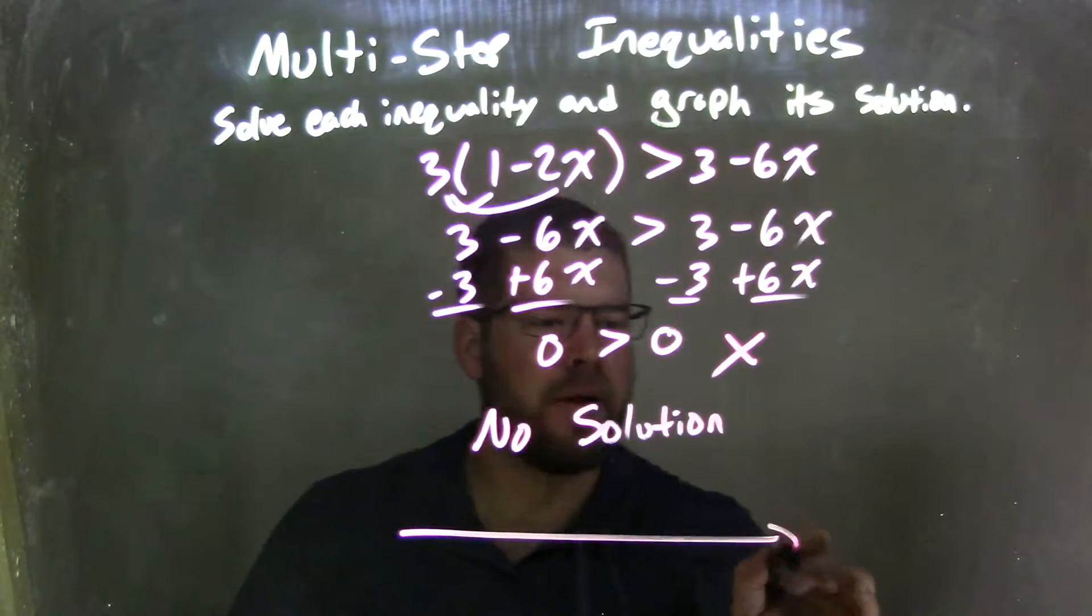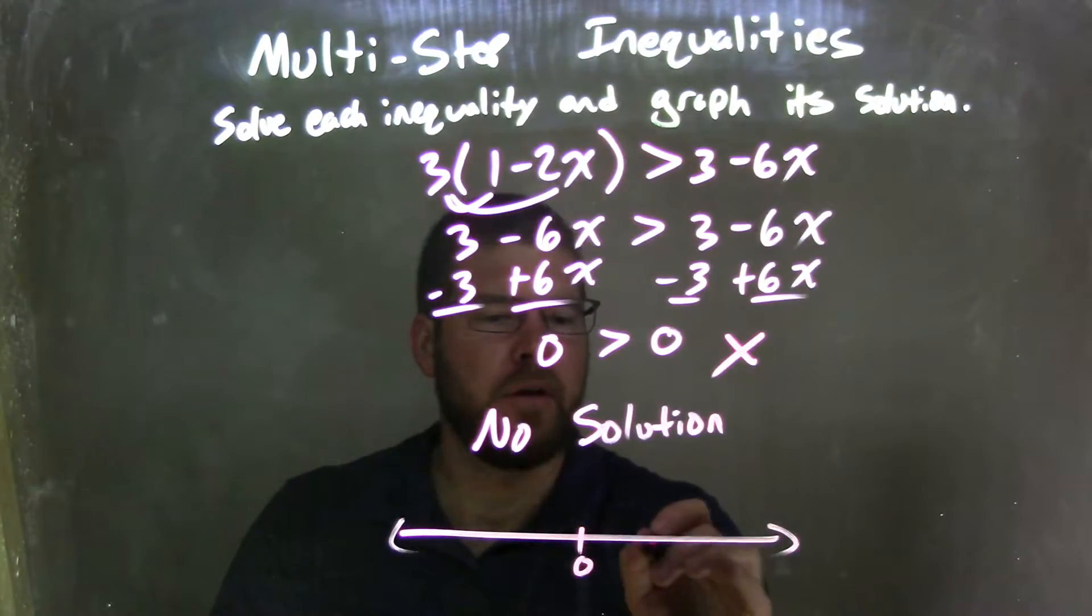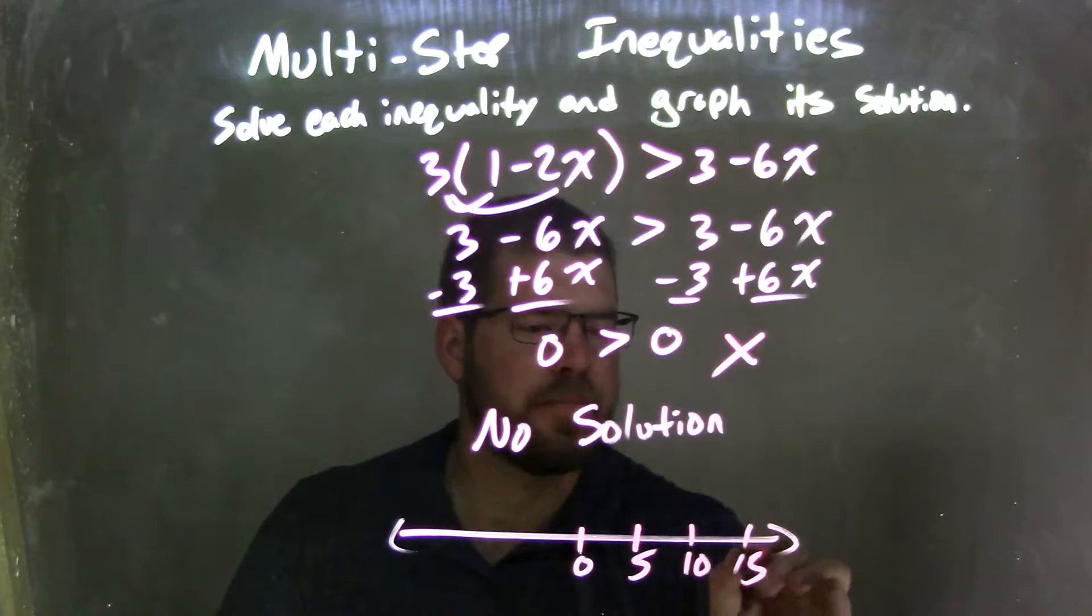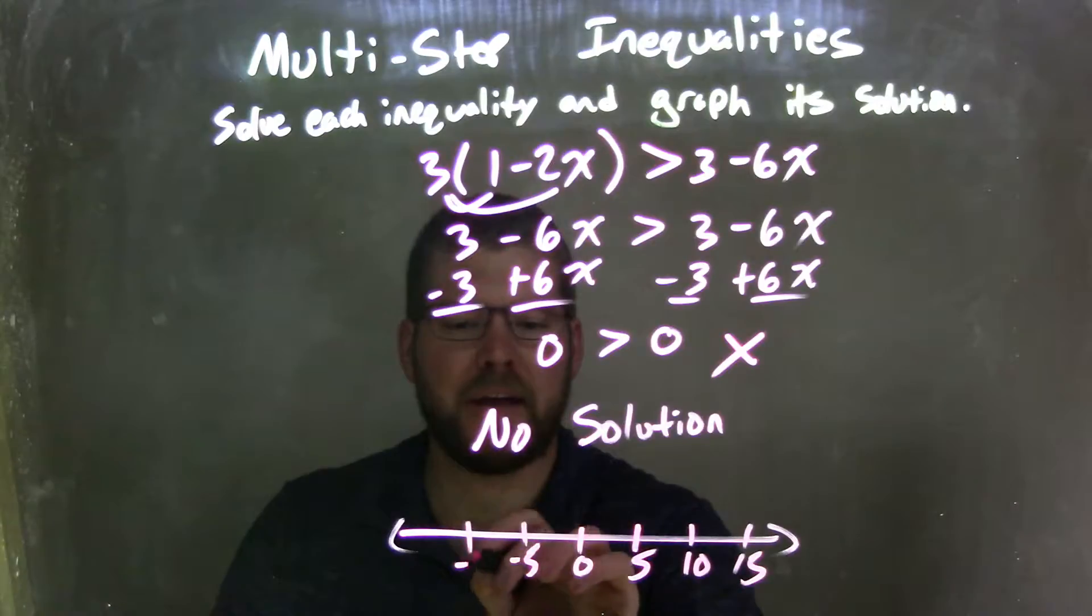So how do we graph that? Well, I make my number line here, 5, 10, 15, negative 5, negative 10, negative 15.